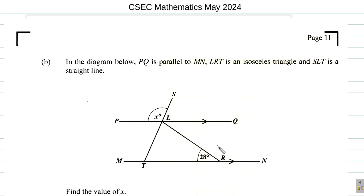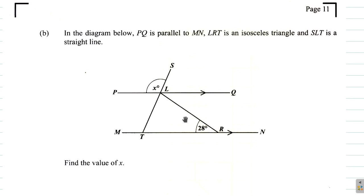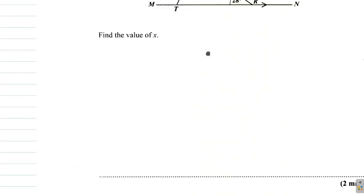LRT. LRT is an isosceles triangle. Alright. And SLT, SLT is a straight line. Okay. Find the value of X. The one X. The value of X.